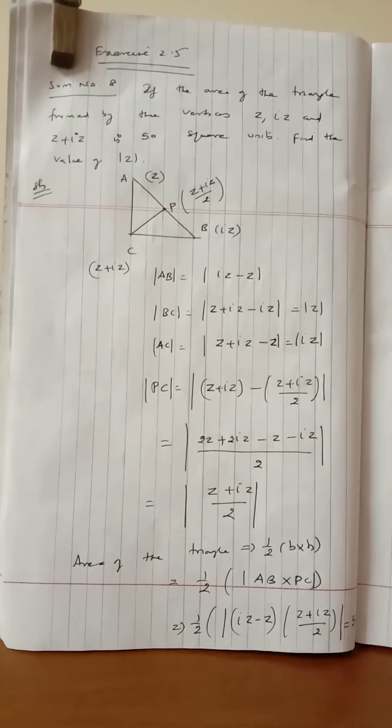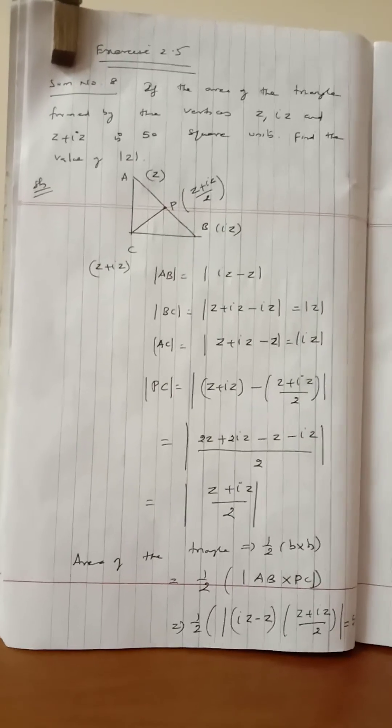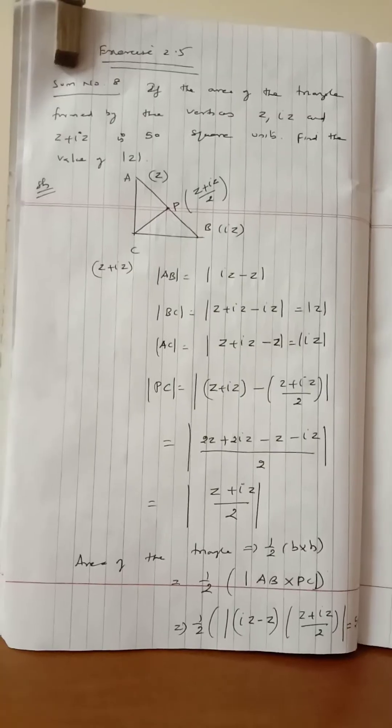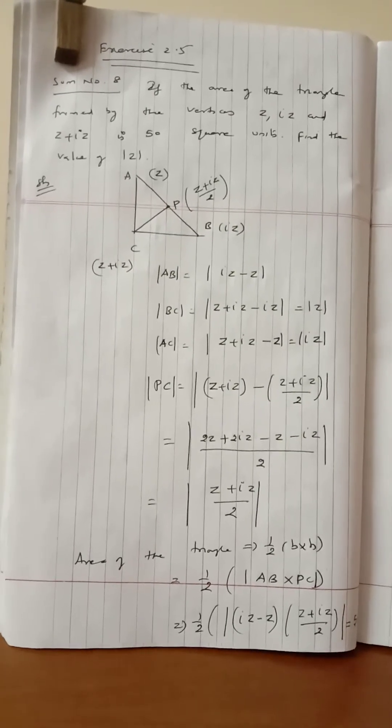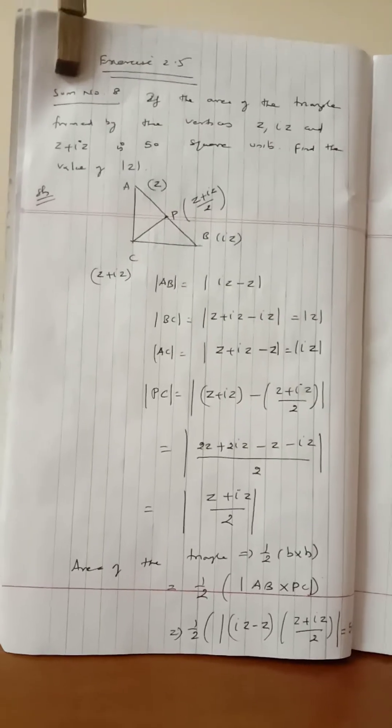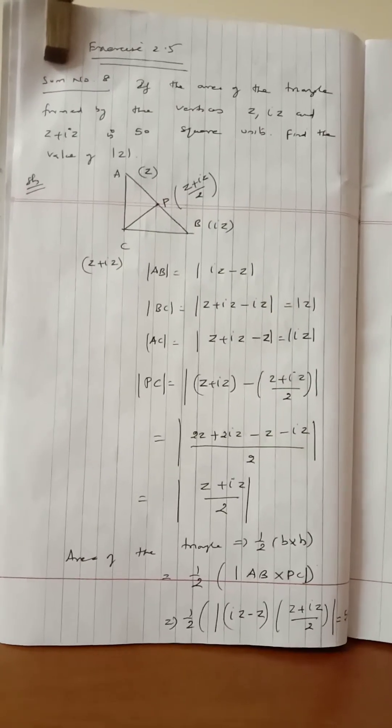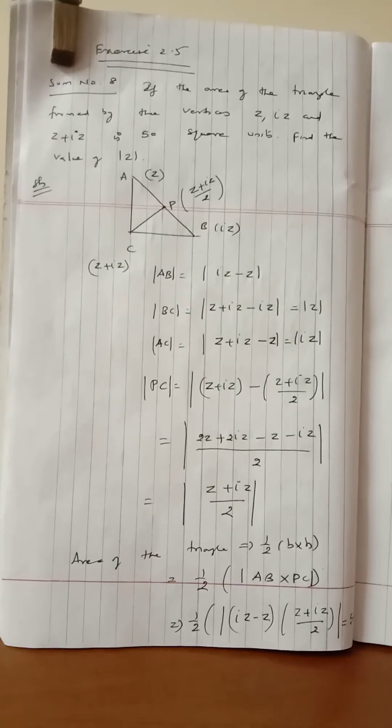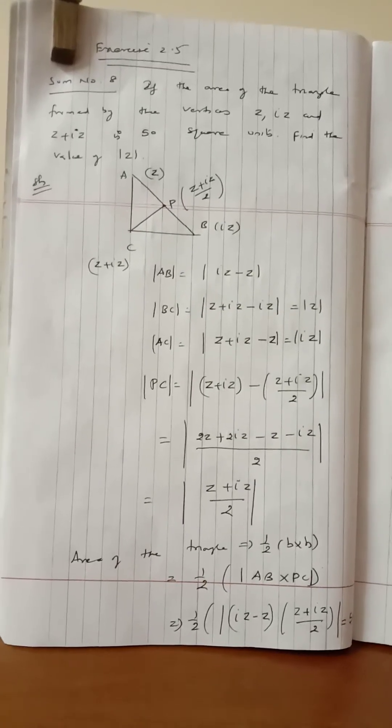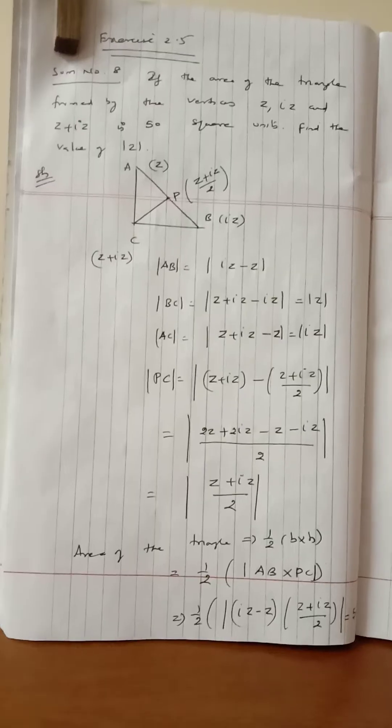A is at point z, B is at point iz. The midpoint P is z plus iz over 2. Next, PC distance is the modulus of C minus P.